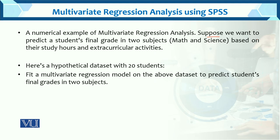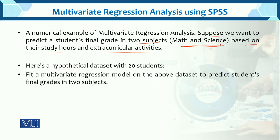Here is a numerical example of multivariate regression analysis. Suppose we want to predict a student's final grade in two subjects — math and science — based on their study hours and extracurricular activities. These are the dependent variables. This is hypothetical data with 20 students. We have collected data from 20 students and will fit a multivariate regression model.